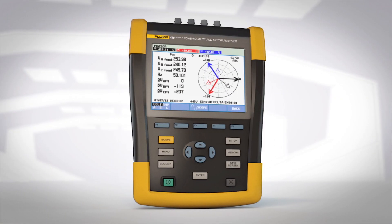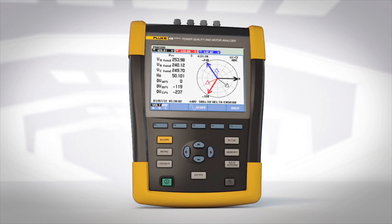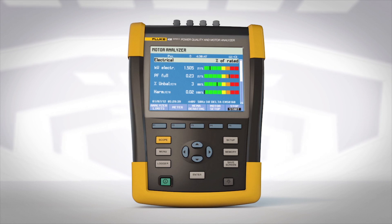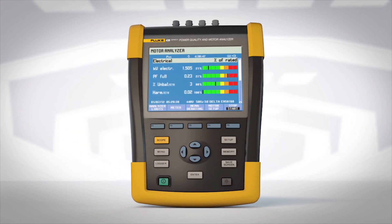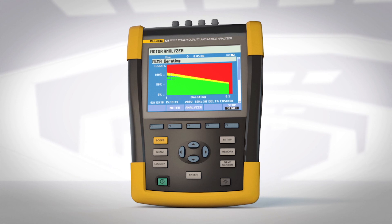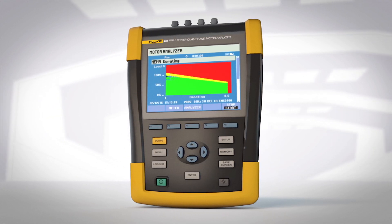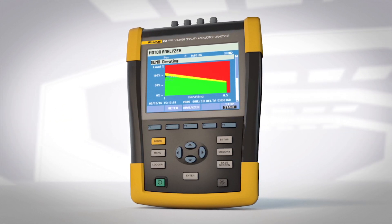With an intuitive user interface, optimized current probes, and at-a-glance motor status screens, the Fluke 438 gives you the motor troubleshooting information you need to make better maintenance decisions and keep your plant up and running.